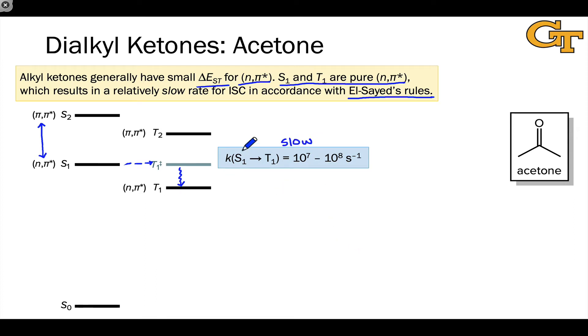This just means that the ISC process is relatively slow for dialkyl ketones. This means that we can expect reactions from S1 to happen with relatively good efficiency without having to worry about intersystem crossing.